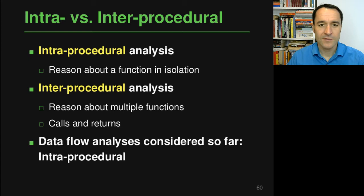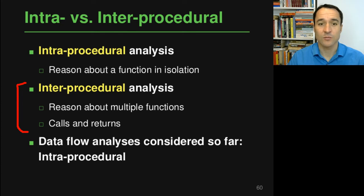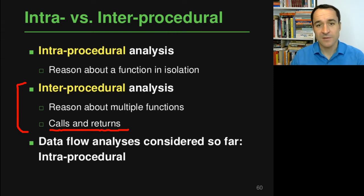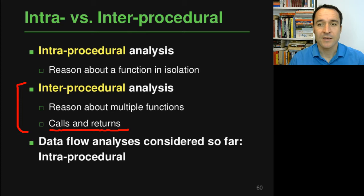In contrast, an inter-procedural analysis reasons not just about a single function but about multiple functions together. In particular, this means that the analysis is reasoning about function calls and function returns, because this is how you get from one function to another and then back.